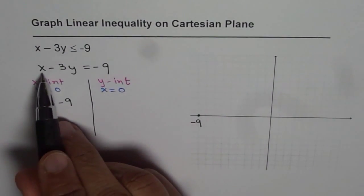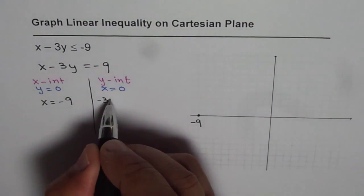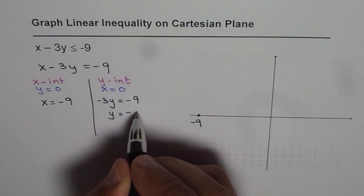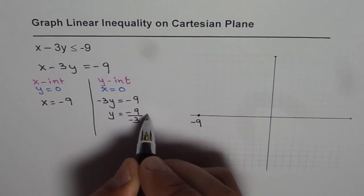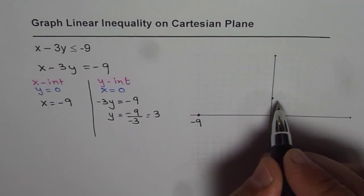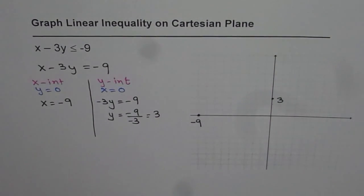For y intercept, x = 0, so -3y = -9, y = -9 divided by -3 which is 3. So it is 1, 2, 3, that is the y intercept.